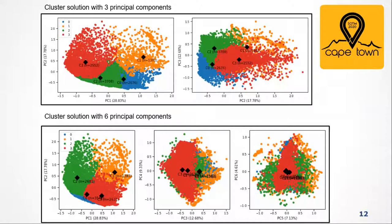An iterative process was used to determine how many principal components would be beneficial for the clustering algorithm. Various principal component solutions were used for cluster analysis and then visualized. The first three principal components helped the clustering algorithm differentiate between the four clusters, providing information that helps differentiate between them. However, as more principal components were added, they did not provide much additional information for differentiating clusters. Ultimately, a three-principal-component solution was chosen to describe the contribution attributes for each user, and these values were then used for the clustering process.